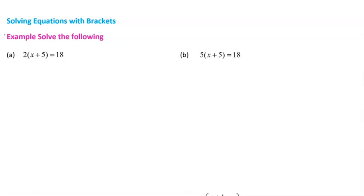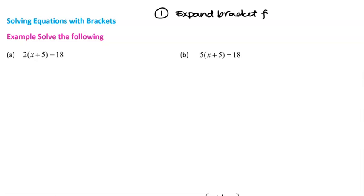Looking at this first question, let's talk about the two strategies. Strategy number one, which always works, is to expand the bracket first. This strategy will work in any situation. The other strategy, which only sometimes works cleanly, is if the number at the front and the number on the other side of the equals sign have a common factor — for example, 2 and 18 share a common factor of 2, so we can divide both sides by 2 to get rid of it.